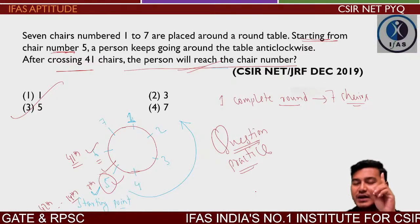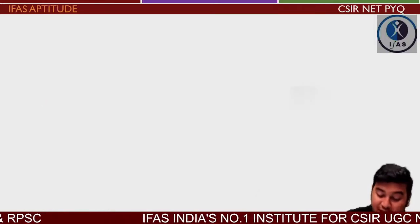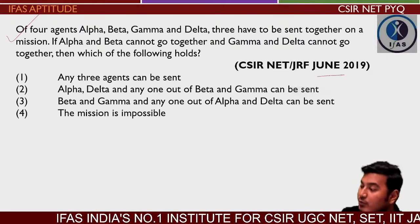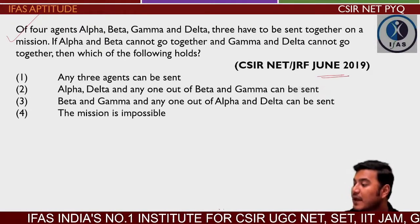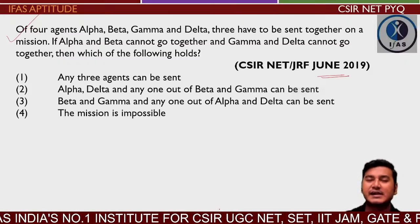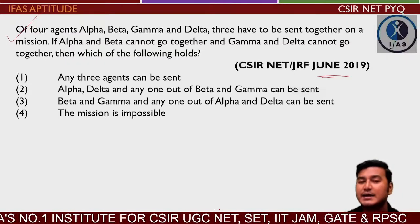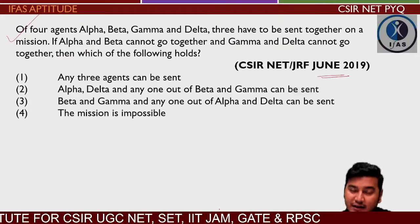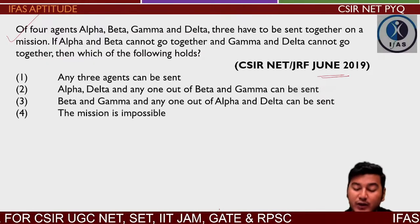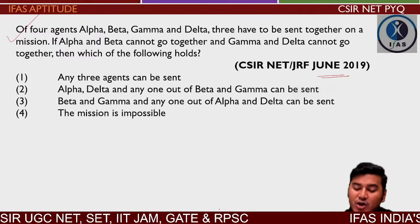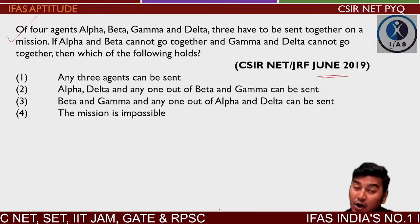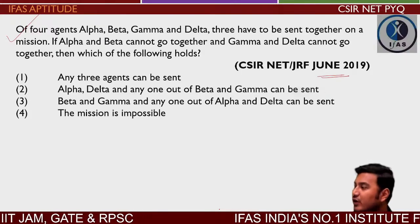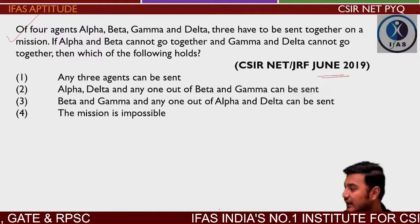Now the next question — I want the correct answer from every one of you. It is a very easy and interesting question from June 2019. Of four agents — alpha, beta, gamma, and delta — three have to be sent together on a mission. If alpha and beta cannot go together, and gamma and delta cannot go together, then which of the following holds?